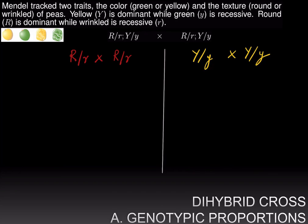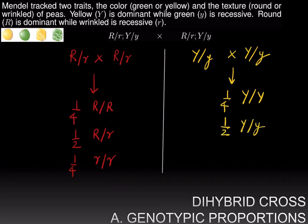And we know that this cross yields three genotypes: a quarter are big R big R, a half are big R little r, the heterozygotes, and a quarter are little r little r. The same is true for the color trait, the yellow versus green trait. You can get a quarter big Y big Y, a half big Y little y, and a quarter little y little y.